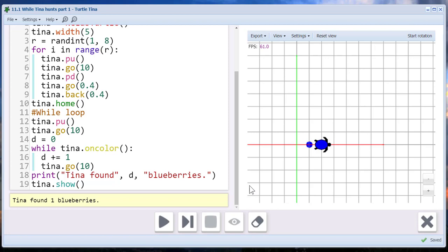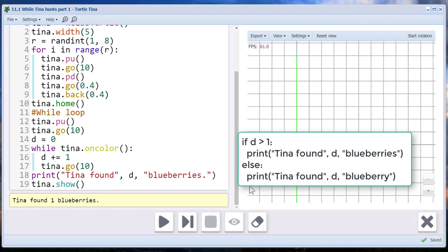And we could write some extra code in there to print out a nicer print statement. So when she finds one, it just says one blueberry. And when she finds more than one, it prints out blueberries. So we can correct grammar in our print statements using if-else statements. They're useful for all kinds of things.